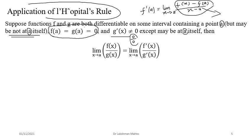If the first derivatives of both numerator and denominator still give an indeterminate form, you proceed to higher-order derivatives. The rule is derived from Taylor's theorem — expanding the functions as Taylor polynomials and simplifying. This is a powerful tool to calculate the limit of a ratio of two functions.